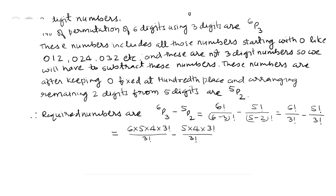So 3 factorial is cancelled by denominator of 3 factorial in both fractions. And what we get is 6 × 5 × 4, that is 120, minus 5 × 4, which is 20. This gives us 100. So 100 such numbers can be made using the digits 0 to 5.